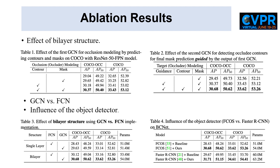In Table 1 and Table 2, we validate the efficacy of explicit occlusion modeling on the first GCN layer and the second GCN layer respectively. In Table 3, we not only show that the bilayer structure could benefit both the FCN and GCN layers, but also investigate the advantage of GCN over FCN. In Table 4, we show BCNET is general to different object detectors.